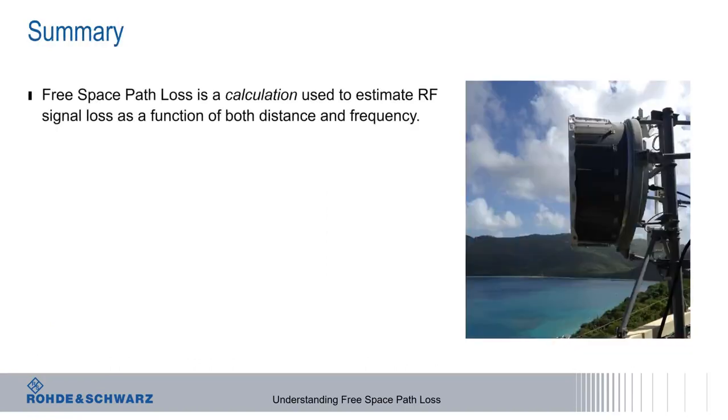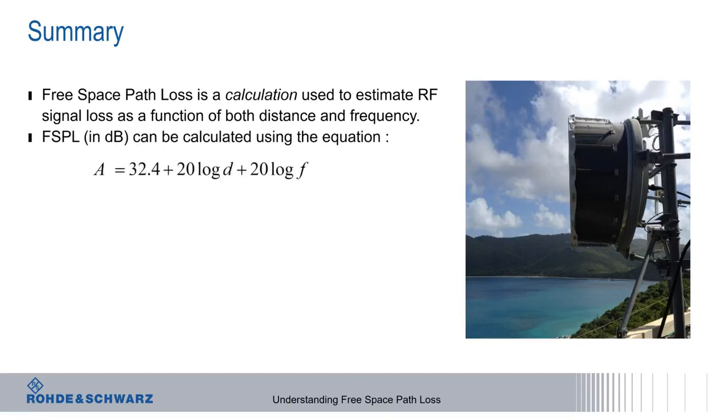So in summary, free space path loss is a calculation used to estimate RF signal loss or attenuation as a function of both distance and signal frequency. The decibel version of the free space path loss equation is A equals 32.4 plus 20 log d plus 20 log f, where d is in kilometers and f is in megahertz. This basic free space path loss equation is often supplemented by subtracting the gains of both the transmit and receive antennas.